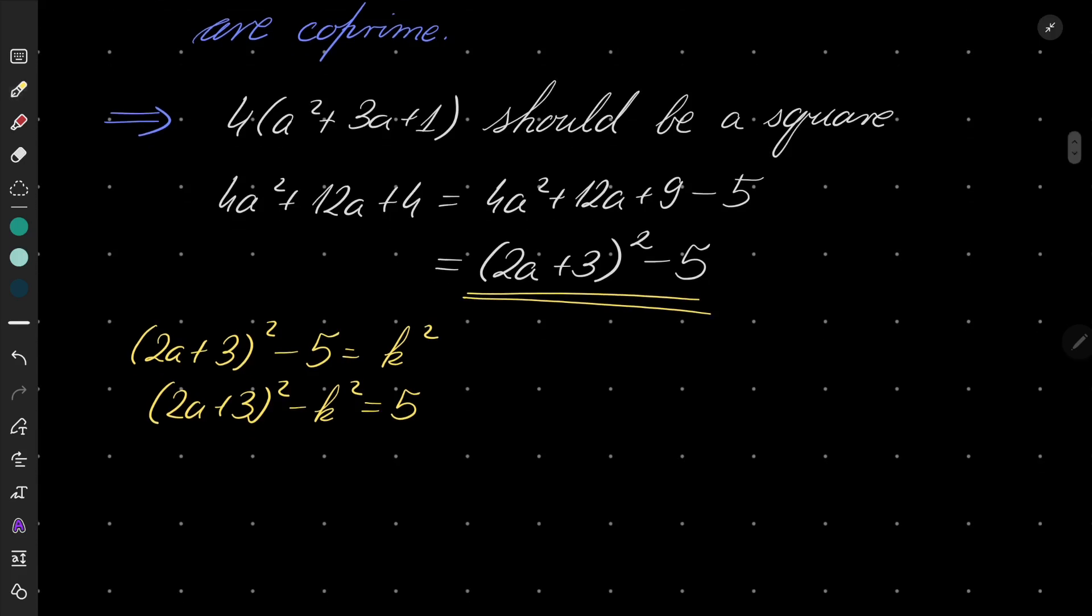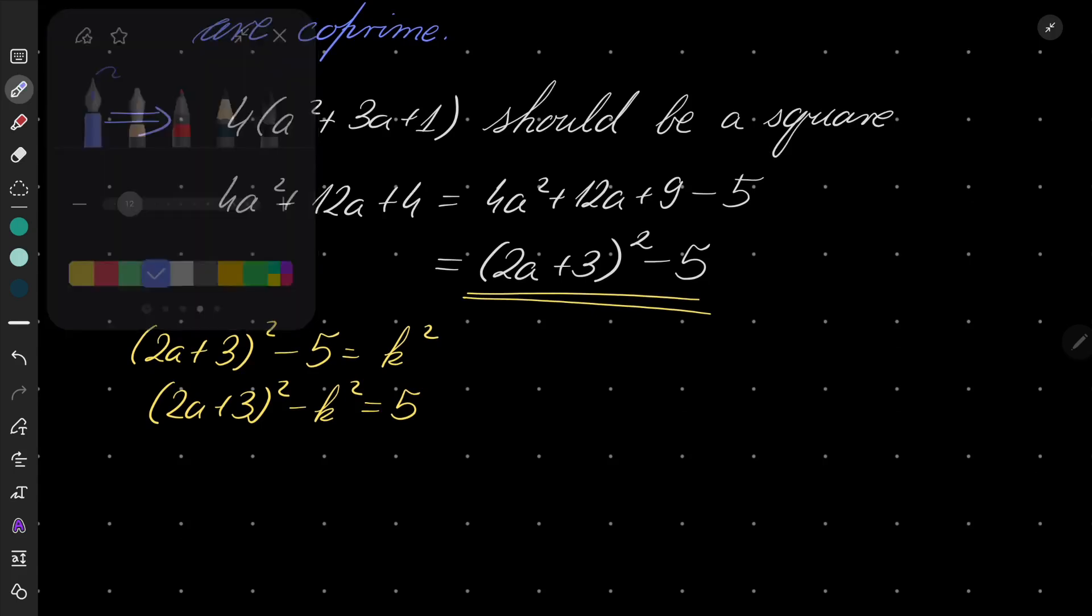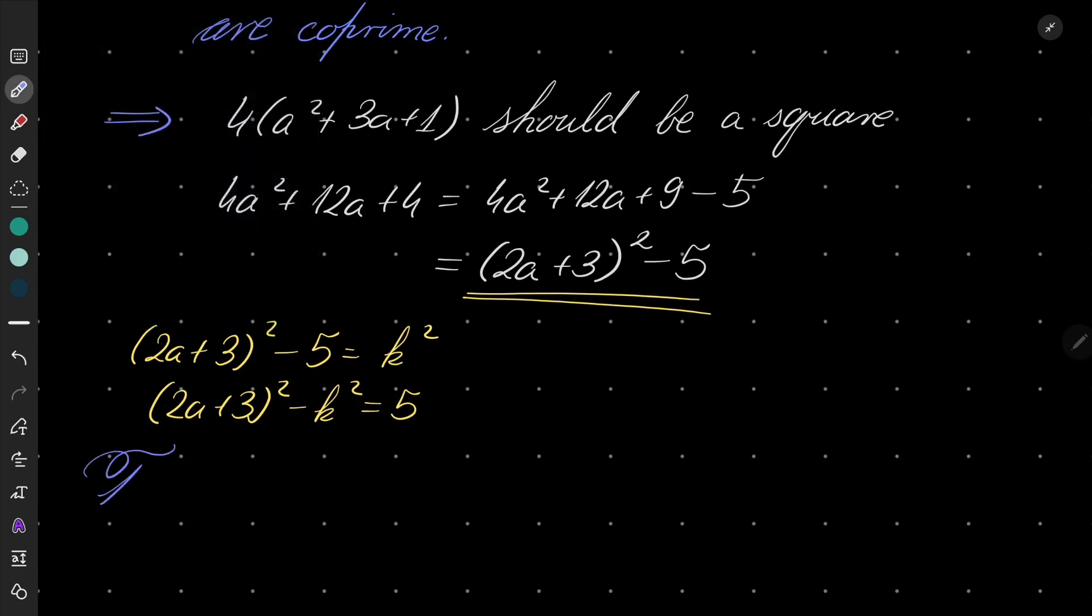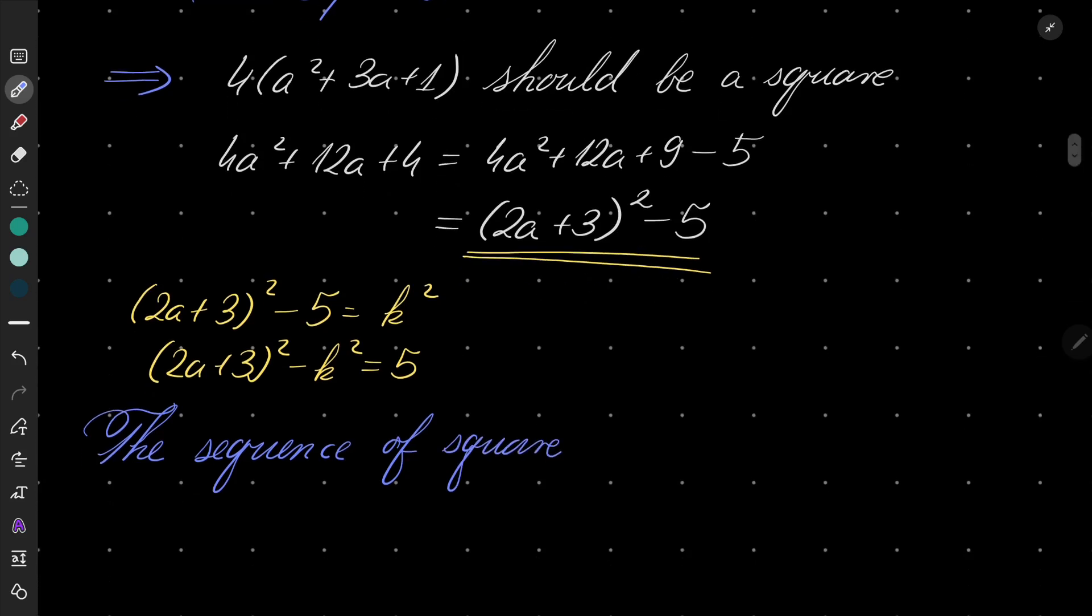But let's write our squares. So the sequence of perfect squares begins with 0, 1, 4, 9, 16, 25, and so on.